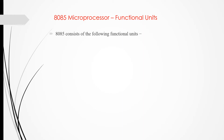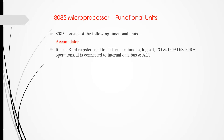The 8085 consists of the following functional units. First, the accumulator: it is an 8-bit register used to perform arithmetic as well as logical operations. It is also used for input, output, and to load or store data. It is connected to the internal data bus and the arithmetic logic unit, and the result is stored in the accumulator.